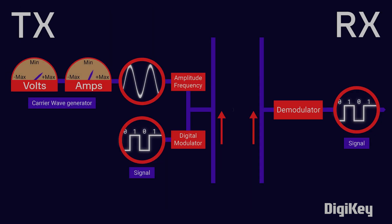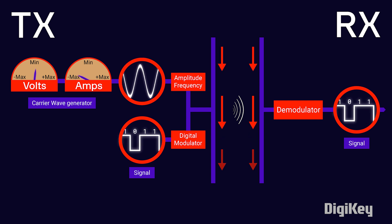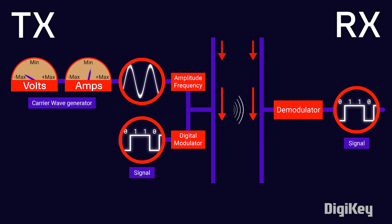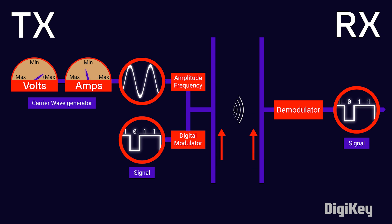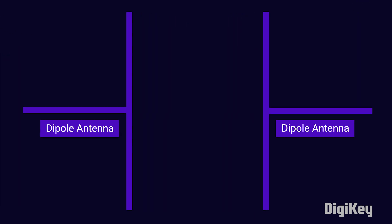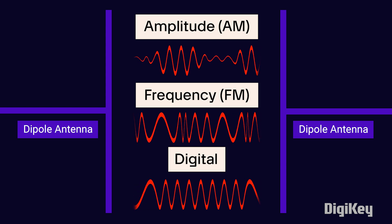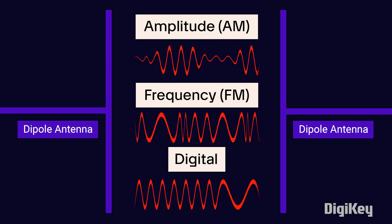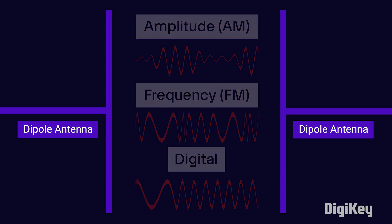On the transmitting end, a voltage with a specific frequency is applied to the antenna within a device. The antenna's internal elements use that voltage, applied current, and frequency to create electromagnetic waves that travel to the receiver. The receiver picks them up from thin air essentially, thus inducing an input voltage for the receiving device.